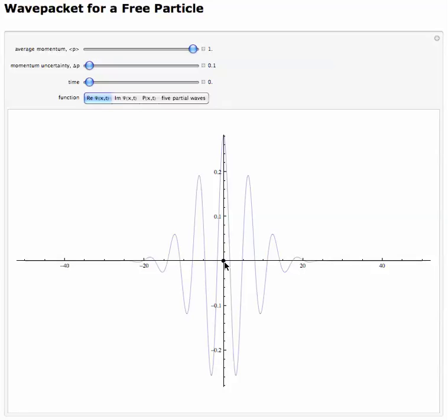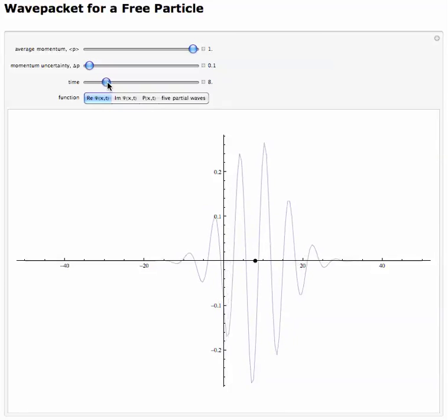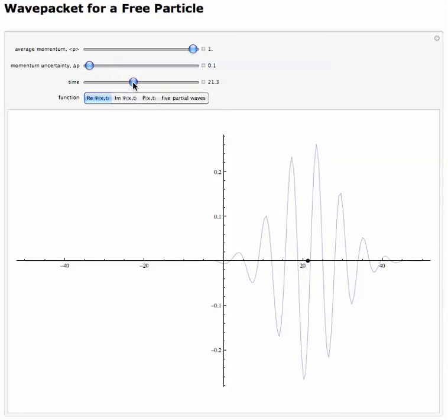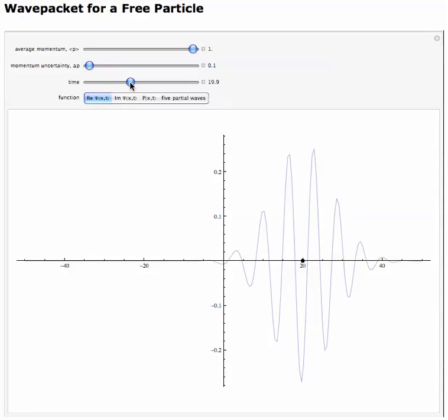But what you also notice is that the phase velocity of this wave packet is different than the group velocity, so the group velocity is represented by the movement of this black dot, and the phase velocity is represented by the movement of any given peak. So for example, let's take the central peak here and watch how it moves, and you see that it's moving slower than the particle itself, and in fact, it moved half as far in a particular amount of time as the particle itself, and this agrees with what we showed in the classical case, that the group velocity is actually half the particle velocity.